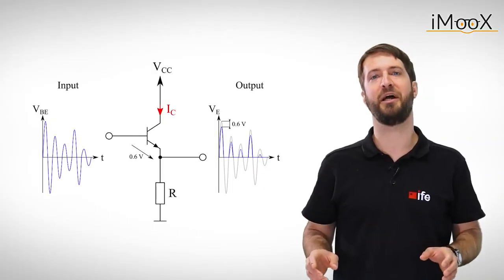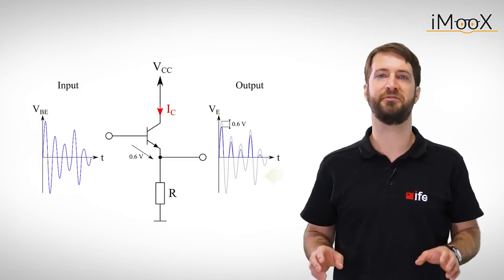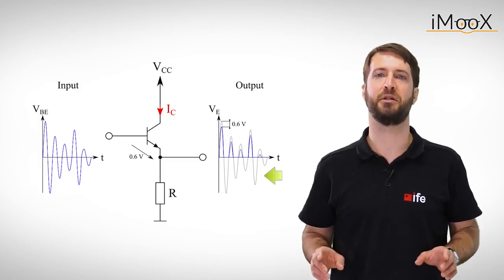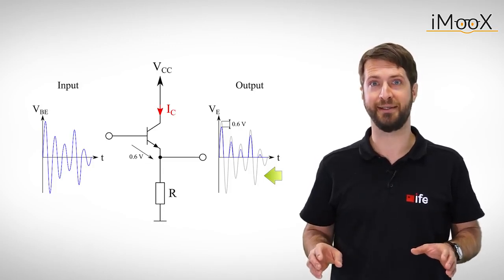But if we want to amplify an AC coupled signal, like an audio signal, we have to make sure that we don't cut off the negative swing of the output signal. You might heard of this effect, it's called clipping, and it sounds like this.